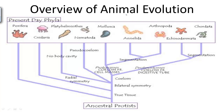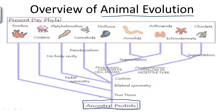How did animals evolve? Let's start with the ancestors of animals. The ancestors of animals were likely one-celled, tiny primitive organisms living in the oceans. These protease-like organisms evolved into the first eukaryotic, multicellular, animal-like organisms about 1.5 billion years ago.